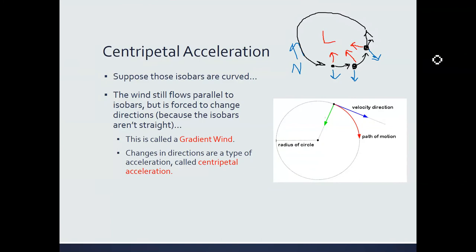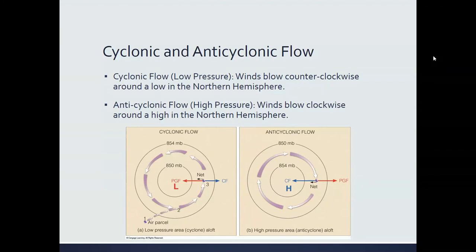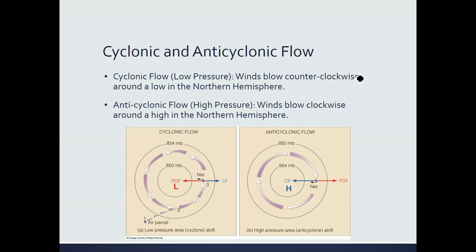This isn't called geostrophic balance in this case — instead the wind is called gradient wind. The wind still travels parallel to the isobars, but because the isobars are curved, the wind travels parallel to those curved isobars. Putting this all together, around an area of low pressure, winds rotate counterclockwise in the northern hemisphere. This is called cyclonic flow — the result of the pressure gradient force and Coriolis force constantly changing directions due to the wind's rotation.